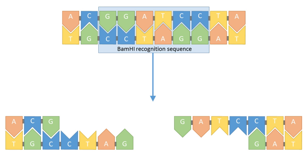Molecular cloning generally uses DNA sequences from two different organisms: the species that is the source of the DNA to be cloned, and the species that will serve as the living host for replication of the recombinant DNA.